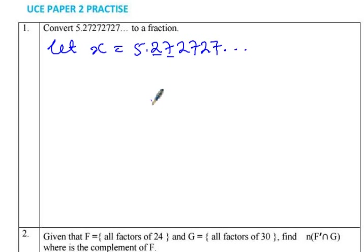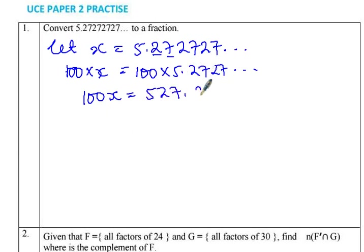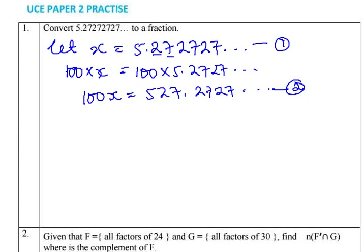Since we only have two numbers and we are working in a decimal base, we are going to multiply by 100. What I do on one side I also do on the other side of my equation. So when we multiply, we have 100x is equal to — the decimal point moves since I'm multiplying by 100 — 527.2727. You can write as many digits as you want. This is our first equation and this is our second equation.